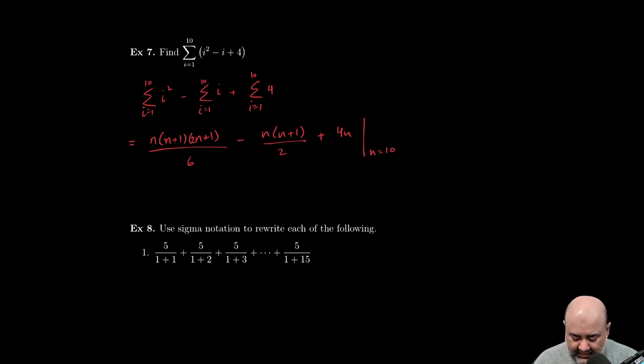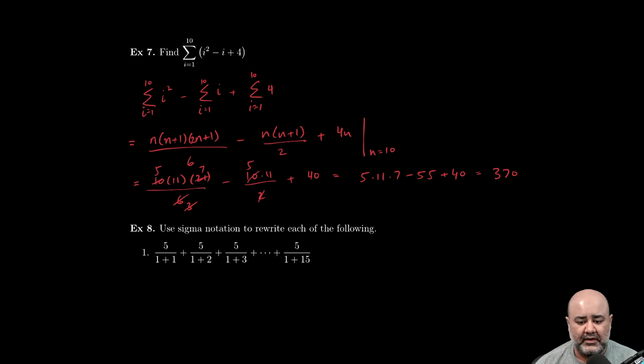At this stage you plug in n equals 10, so 10 times 11 times 21 over 6 minus 10 times 11 over 2 plus 4 times 10 is 40. If you clean this up, 2 goes into 10 five times, 2 goes into 6 three times, so 5 times 11 times 7 minus 55 plus 40. I'm going to use a machine for this. This is 370. Just in the nick of time. We'll see you guys in the next video.